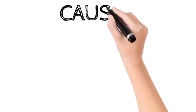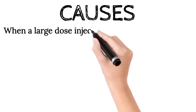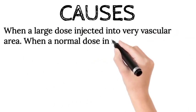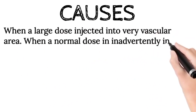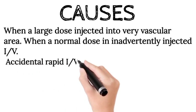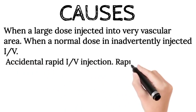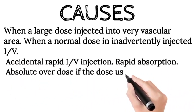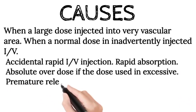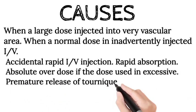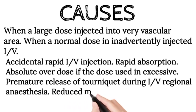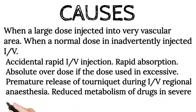Causes: when a large dose is injected into a very vascular area; when a normal dose is inadvertently injected intravenously; accidental rapid intravenous injection; rapid absorption; absolute overdose where the dose used is excessive; premature release of tourniquet during intravenous regional anesthesia; and reduced metabolism of the drugs in severe liver disease.